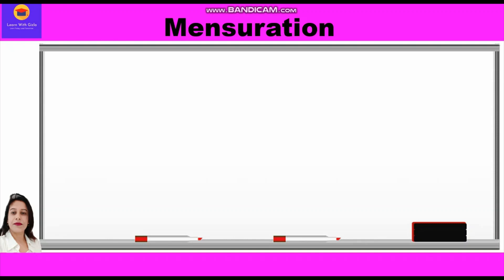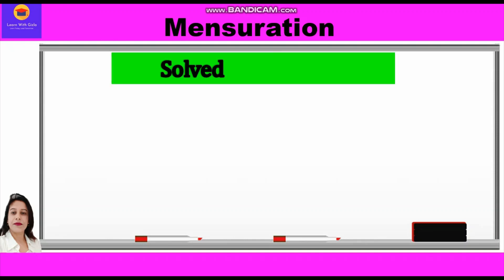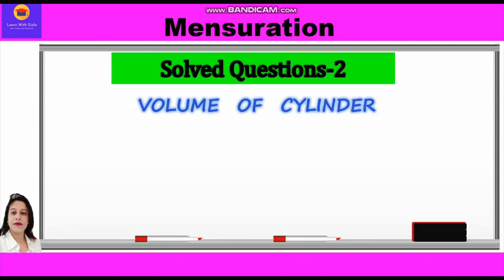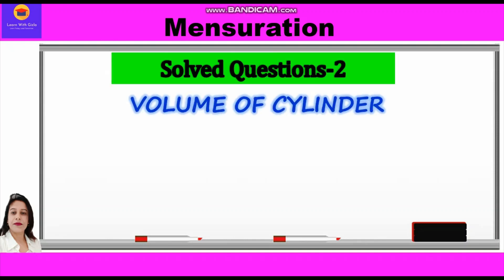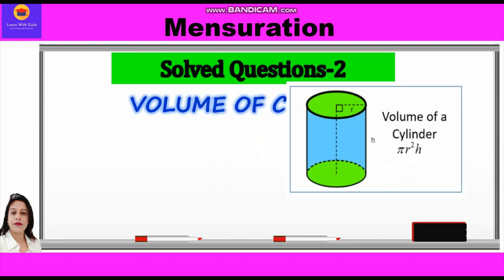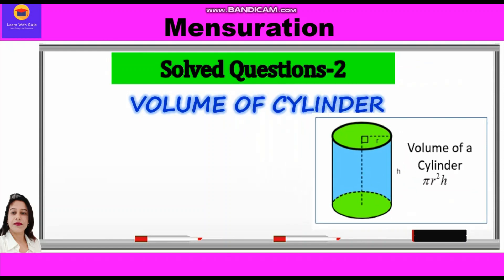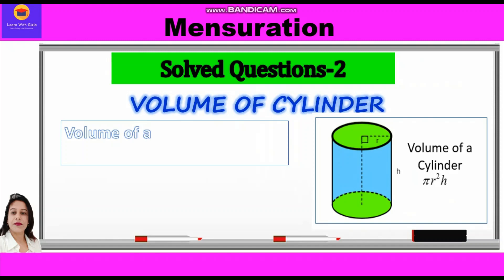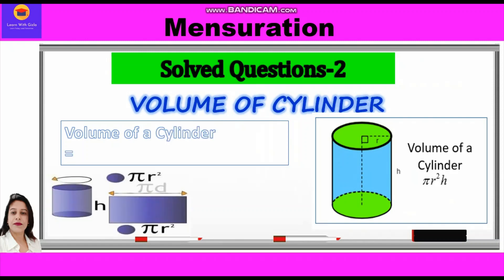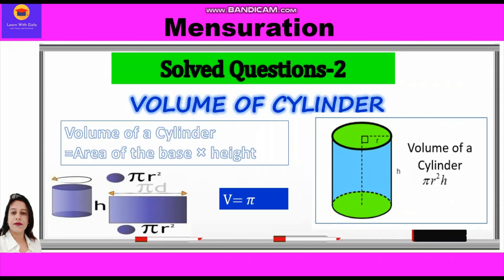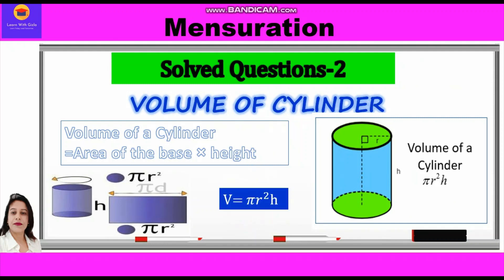Hi everyone. In this video on mensuration, we shall take up some solved questions related to volume of a cylinder. Let's revise the formula first. Volume of a cylinder is equal to area of the base into height. And since the base is circular, therefore volume is equal to pi r squared h.